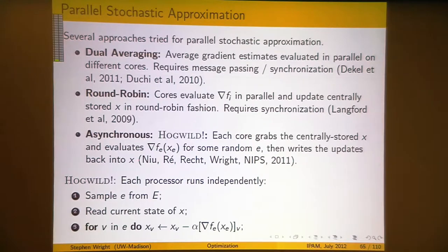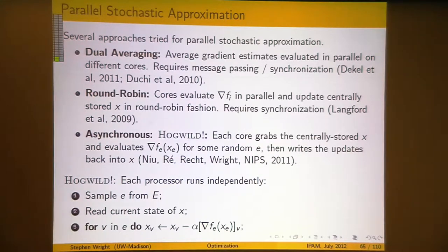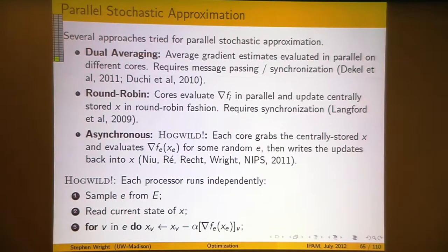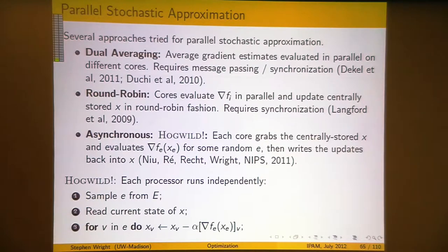Another approach is a round-robin type method: each core evaluates its gradient estimate in parallel, but they take turns updating x. x is in a centrally stored repository all cores access; each core does a gradient evaluation, waits its turn, then updates x. This works well if gradient evaluations are expensive, because a core won't wait long for its turn to update x. On the other hand, if computation is dominated by memory read-write time, this approach is not very efficient because each core evaluates its gradient and then has to wait for its turn — not particularly efficient.